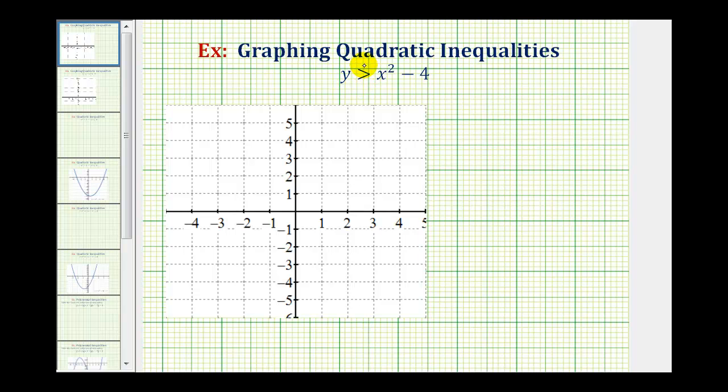We want to graph the solution to the quadratic inequality y is greater than x squared minus four on the coordinate plane. The solution to our inequality will be the region on the coordinate plane where the coordinates of all the points in that region will satisfy this inequality.